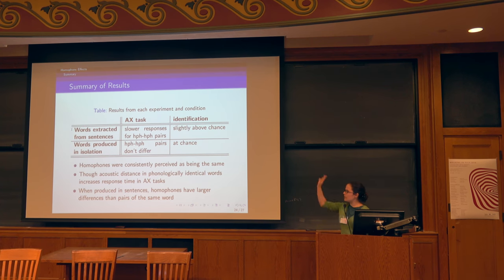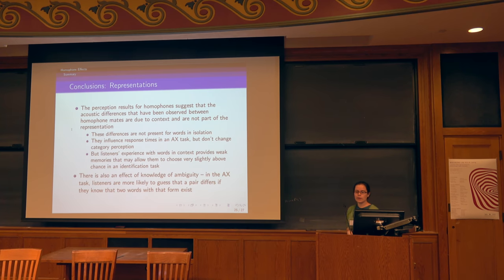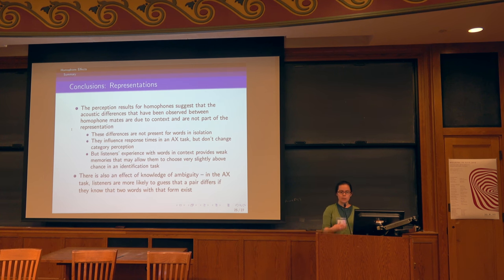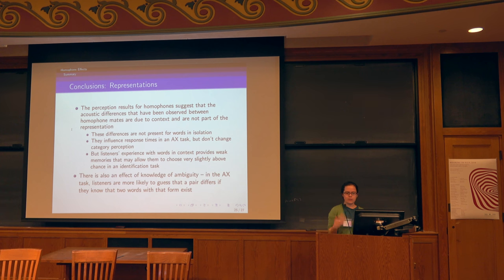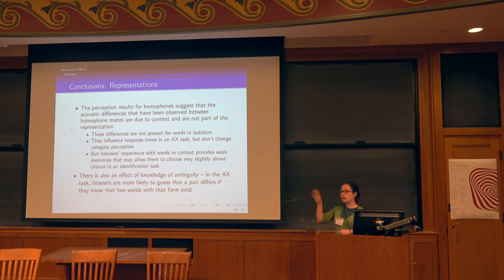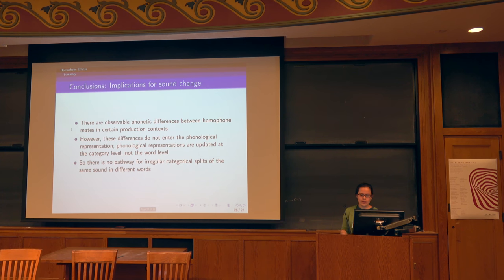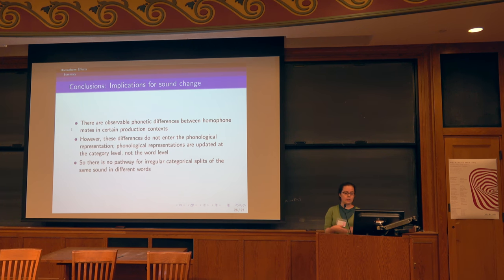In summary, what this points toward is that observed production differences between homophone mates are due to context and aren't part of the representation — partially because they disappear when words are produced in isolation. They do influence response times when juxtaposed, but they don't change perception. We have fairly weak memories that allow identification slightly above chance, but that seems to be an exemplar memory effect rather than a representational one. Basically, this doesn't give us a difference we can leverage to predict irregular splits, because the differences don't enter the representation — when we update representations, they're at the category level, not at the word level.